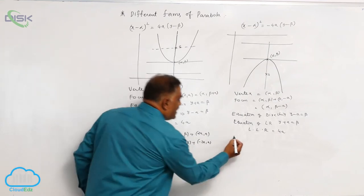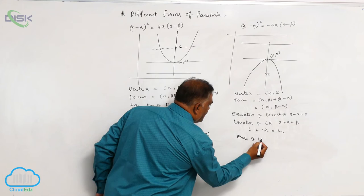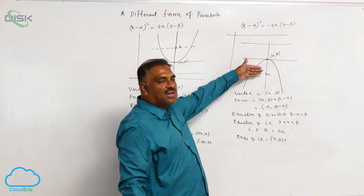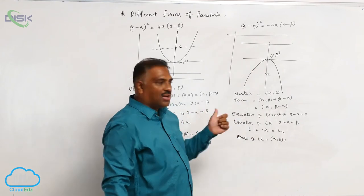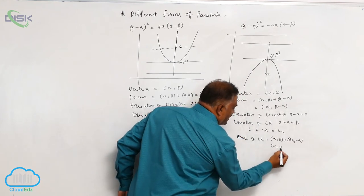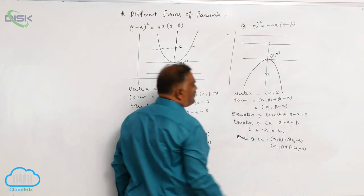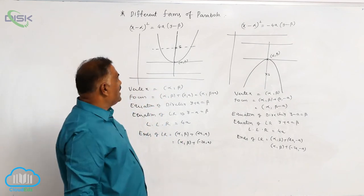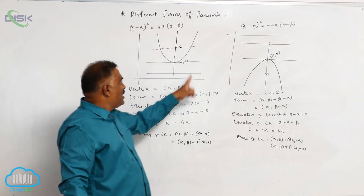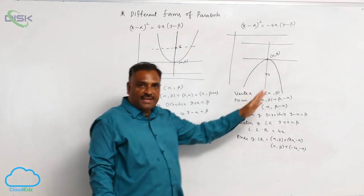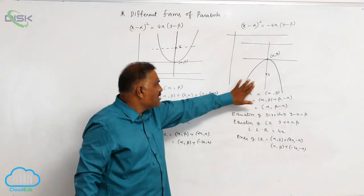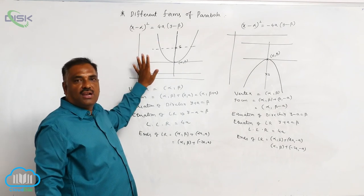The ends of latus rectum are given by alpha plus or minus 2a comma beta minus a, since the previous curve exists in the third and fourth quadrants. We observe very clearly that in both cases — the upward parabola and the downward parabola — the axis of the parabola is always parallel to the y-axis.